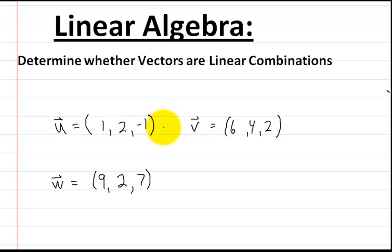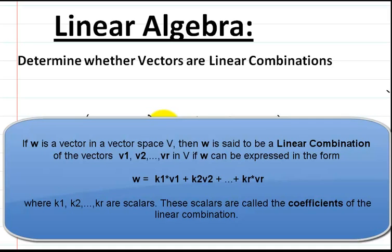So how do we solve that? Well, according to the book, I'm going to read you the definition straight from the textbook. It says: if w is a vector in a vector space v, then w is said to be a linear combination of the vectors v1, v2, all the way through vr, if vector w can be expressed in the form: w equals k1 times v1 plus k2 times v2, all the way to kr times vr.